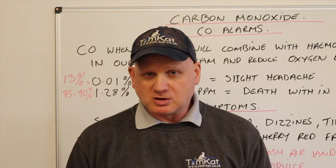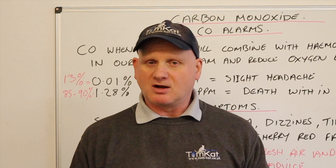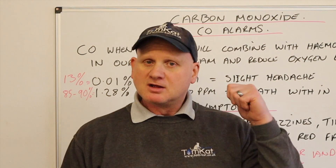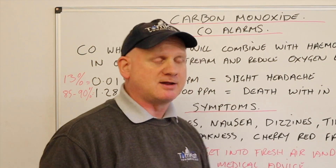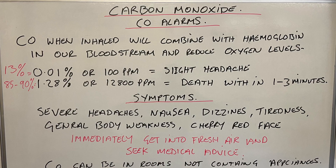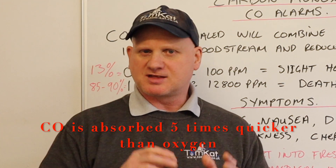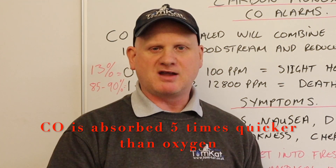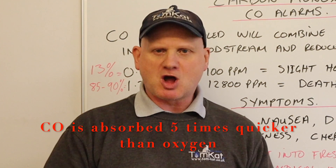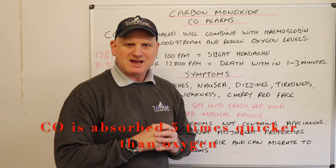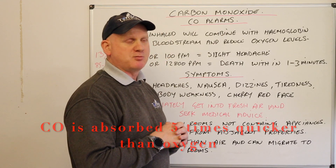The first thing we're going to be looking at is CO poisoning, or carbon monoxide poisoning. CO, when inhaled, will combine with haemoglobin in our bloodstream and will reduce our oxygen levels. CO is a strange thing because our bodies like to absorb it faster than we would absorb oxygen, which is why we quickly get carbon monoxide poisoning.